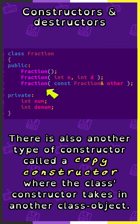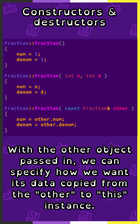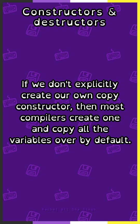There is also another type of constructor called a copy constructor, where the class's constructor takes in another class object. With the other object passed in, we can specify how we want its data copied from the other to this instance. If we don't explicitly create our own copy constructor, then most compilers create one and copy all the variables over by default.